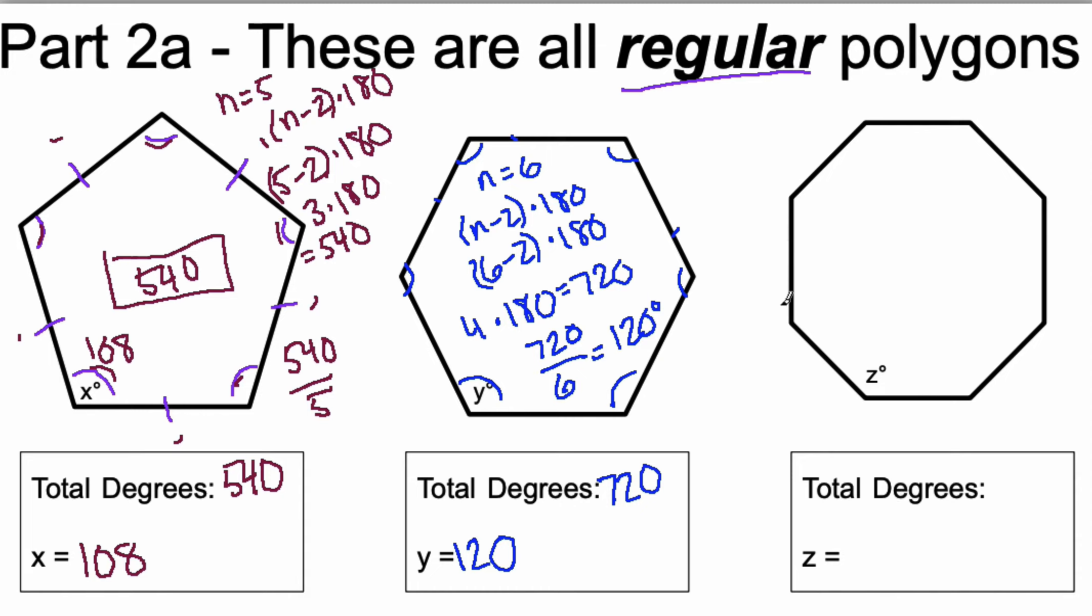Here we go. Let's do this one. We have a regular octagon. Octagons have 1, 2, 3, 4, 5, 6, 7, 8 sides. So n is equal to 8. n minus 2 times 180. But I'll put 8 minus 2 times 180. 6 times 180 is equal to 1080.